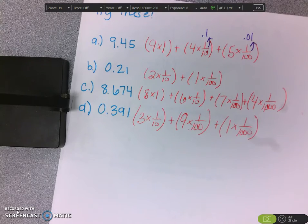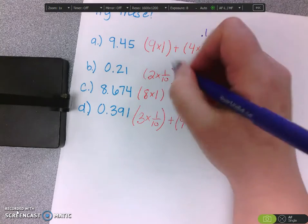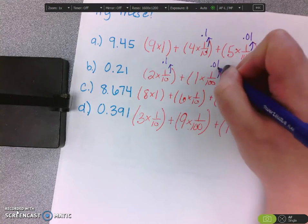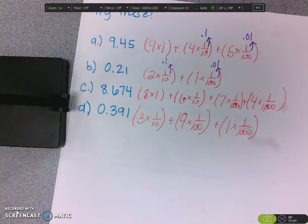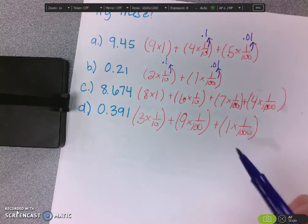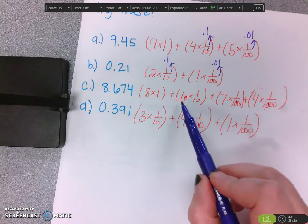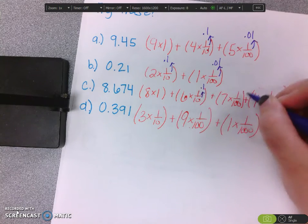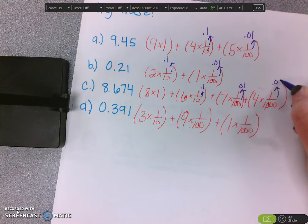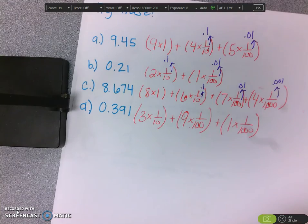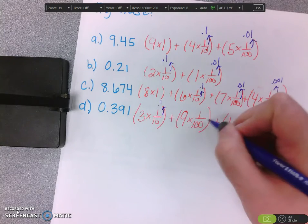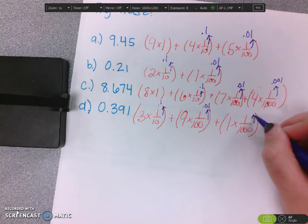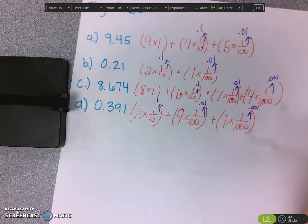For letter B, I have 2 times 1 tenth and then 1 times 1 hundredth. Remember, it is an option to write it as a decimal as well. For the next problem, 8 and 674 thousandths: the 8 is times 1, the 6 is times 1 tenth, the 7 is times 1 hundredth, and the 4 is times 1 thousandth. And again, you're allowed to write that as a decimal. For 0 and 391 thousandths: the 3 is worth 1 tenth, the 9 is worth 1 hundredth, and the 1 is worth 1 thousandth.